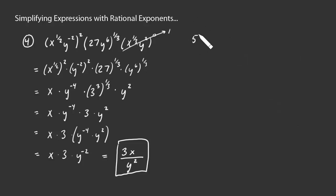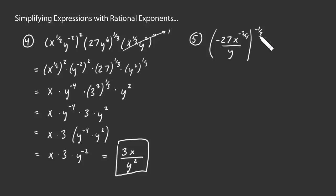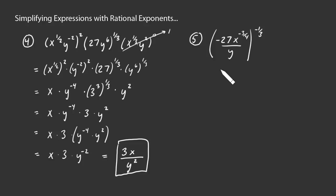For the last example, let's consider a power of a quotient. We have negative 27x to the negative 3 fourths, all over y, raised to the negative 1 third power. Looking inside the parentheses, there's not much we can do. We might be tempted to move x to the negative 3 fourths down to the denominator, but let's not rush — that exponent might become positive later, so let's wait until the very end to handle negative exponents.